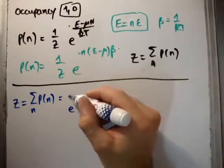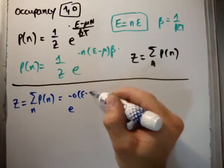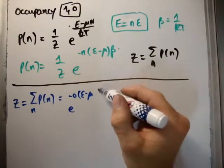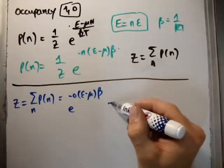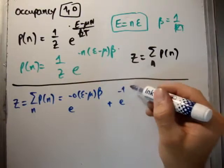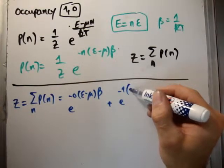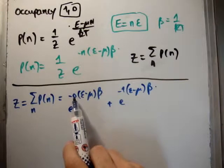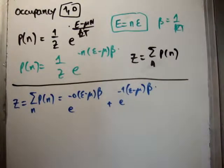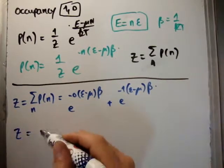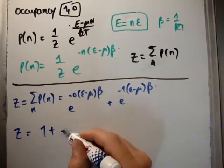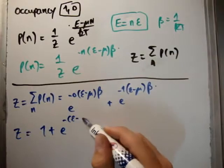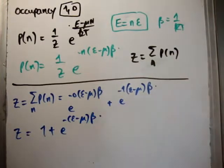So z is the sum over n of P(n). That's going to be very simple. It's going to be e to the minus 0(ε - μ)β plus e to the minus 1(ε - μ)β, because the occupancy n is either 1 or 0. Simple. So z is equal to 1 plus e to the minus (ε - μ)β.